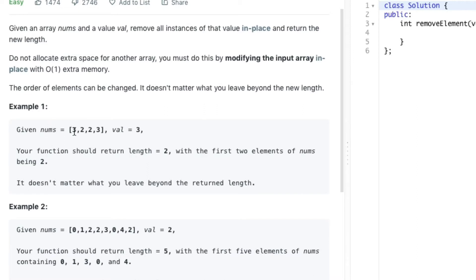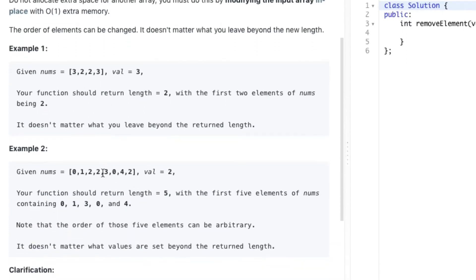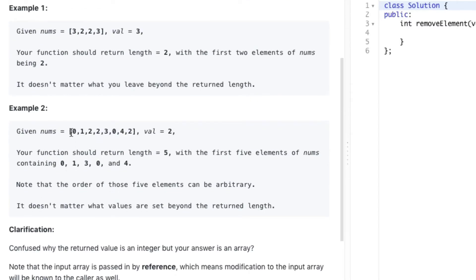Two examples are given here. The first example contains an array nums with the following elements and the val is 3. So after we remove the val from this array, we remain with two elements, which are 2. Consider another example where the nums is as follows